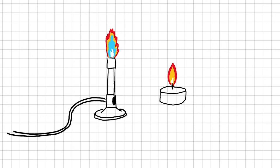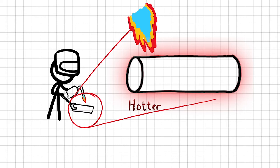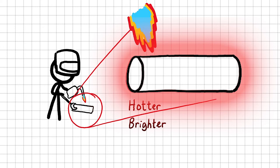As an object gets hotter, two things happen to the light that it emits. First, it begins to emit more light at every wavelength so that it gets brighter. Second, it changes color because the peak of the emission shifts to the blue end of the spectrum.